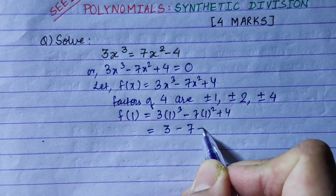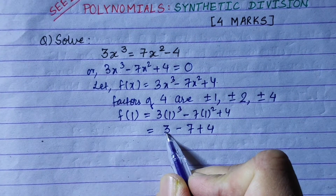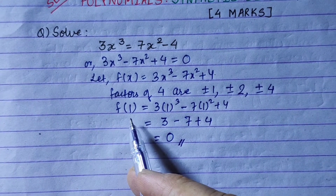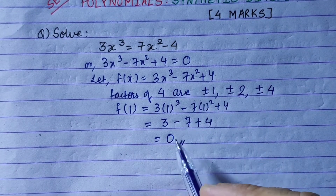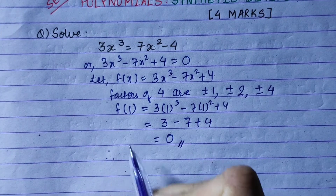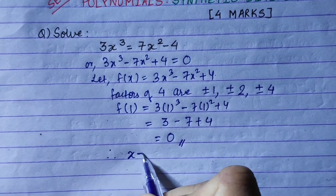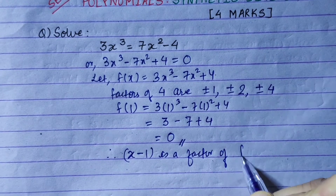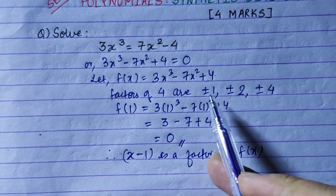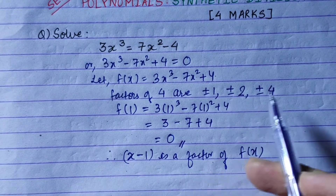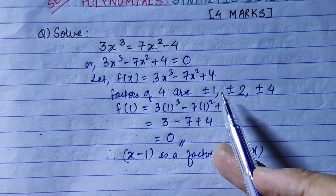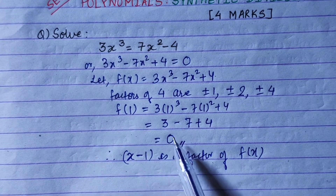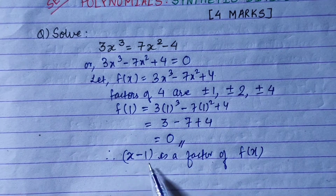When we substitute x=1: -7 + 4 + 7 - 7 = 0. By the factor theorem, if any value substituted into a polynomial gives 0, that value is a factor. Since f(1) = 0, the factor is (x - 1). So (x - 1) is a factor of f(x), as shown by the factor theorem.